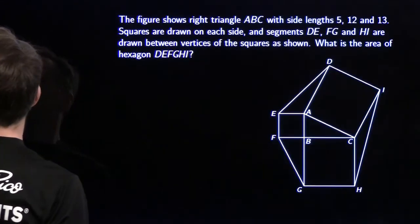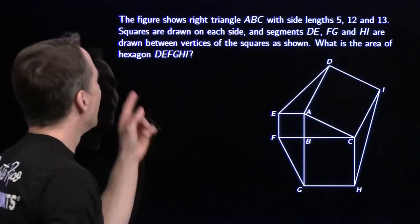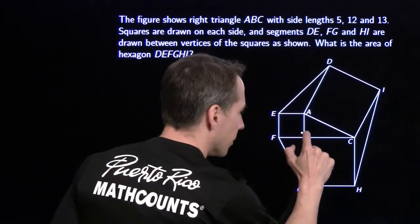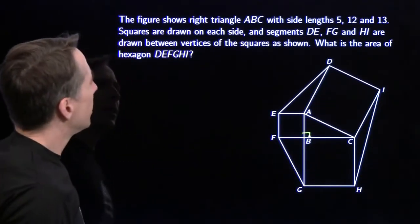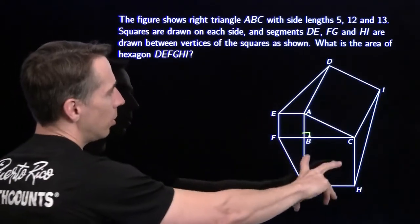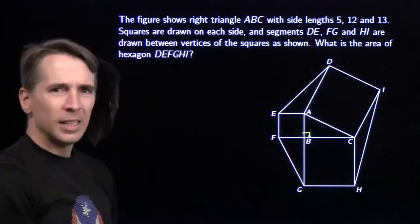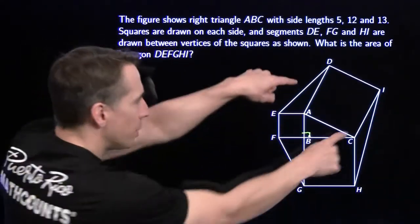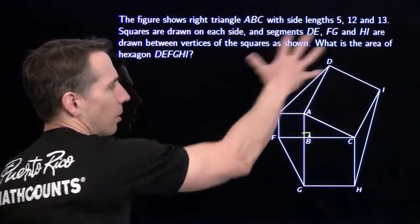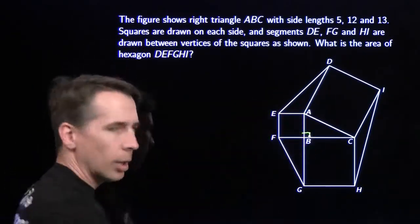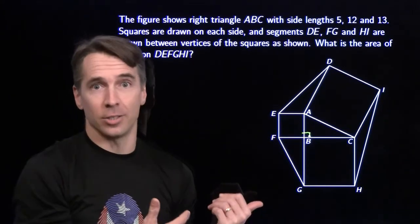Didn't need Harvey at all on that one. Here we go. Figure shows right triangle ABC, and the right angle clearly right there. And the side lengths are 5, 12, 13. And we've got squares drawn on each side. And then we connect these points here to build on these triangles. And we want the area of the whole hexagon. All right, got it all broken up into pieces already. Let's find the areas of those pieces.